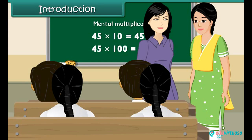Ms. Amita asks Ms. Priya the strength of her class. Ms. Priya replies 35. Ms. Amita performs a quick mental calculation and says, there are 180 students in the other five sections of class 3. If this section is included, the total strength of class 3 is 215.